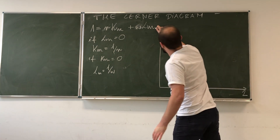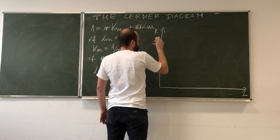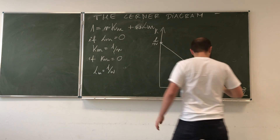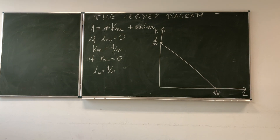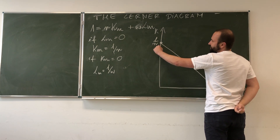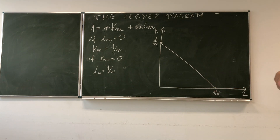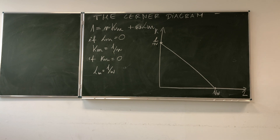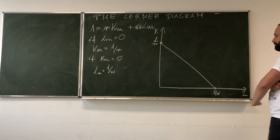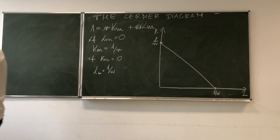Here we have labor on one axis and capital on the other. This is the maximum amount of capital we can have, and this is the maximum amount of labor we can have. We also see that as R gets smaller, we divide by a smaller number, so this intercept gets bigger. The same goes for the labor intercept. The two points are connected with a straight line because this is a linear function. So we know what the cost of producing one unit looks like.